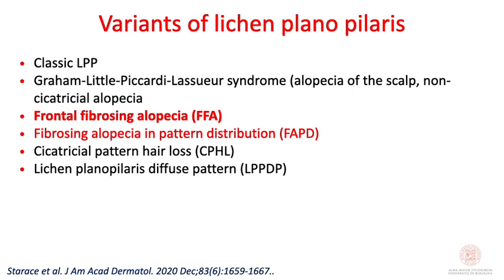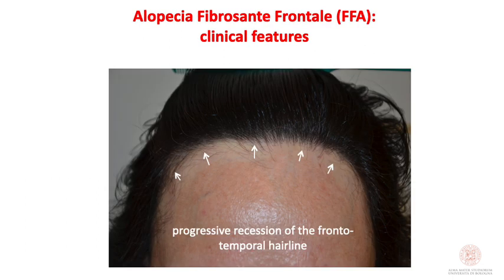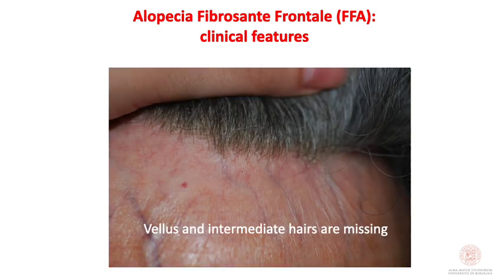One variant is frontal fibrosing alopecia, and another variant of FFA is a pattern distribution form. In general, FFA presents with a typical progressive recession of the frontal-temporal hairline, together with the absence of vellus and intermediate hairs — very typical features to suspect the diagnosis.